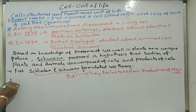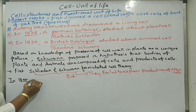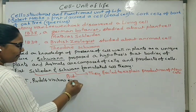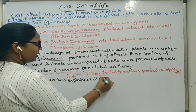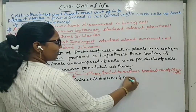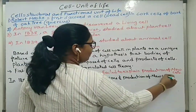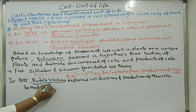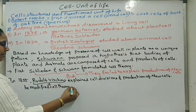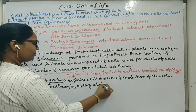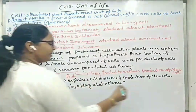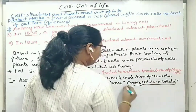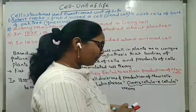So in 1855, Rudolf Virchow explained cell division and the production of new cells. He modified the cell theory by adding a Latin phrase: 'Omnis cellula e cellula.' This means that existing cells are produced from pre-existing cells.